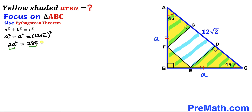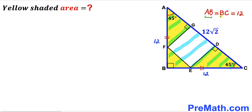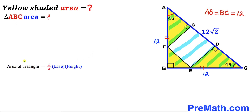Dividing both sides by 2, we get a² = 144. Taking the square root of both sides, a = 12 units. So AB = BC = 12. Now our task is to calculate the area of the big triangle ABC. Recalling the area formula: area = ½ × base × height. In our case, base = 12 and height = 12.